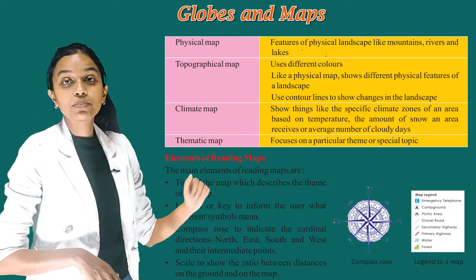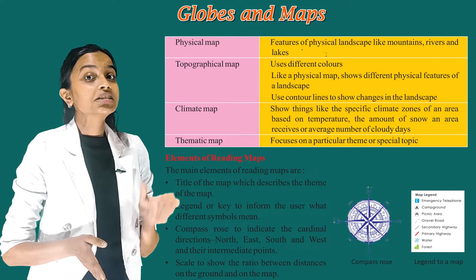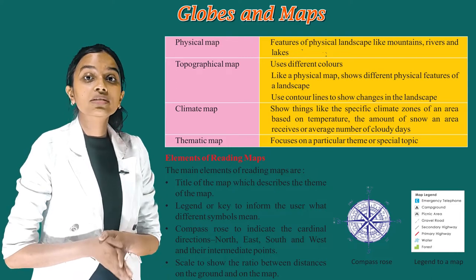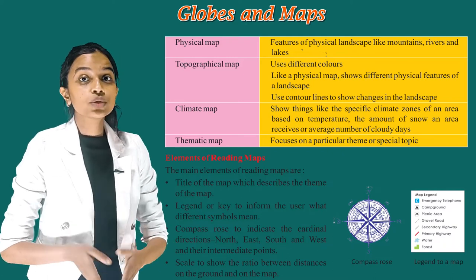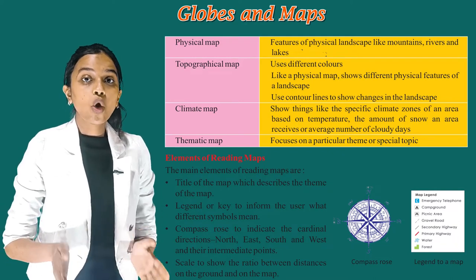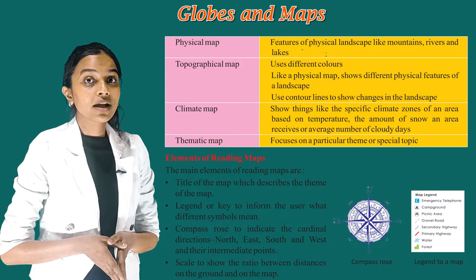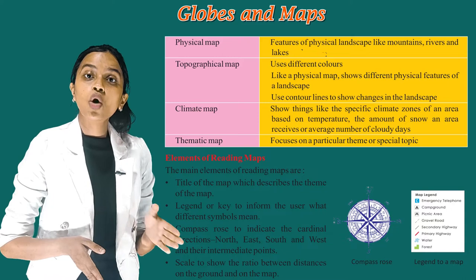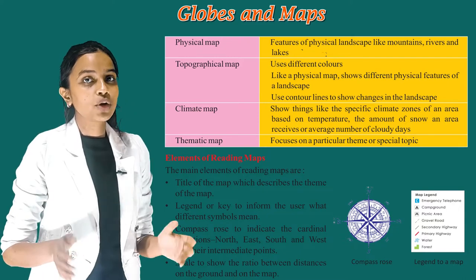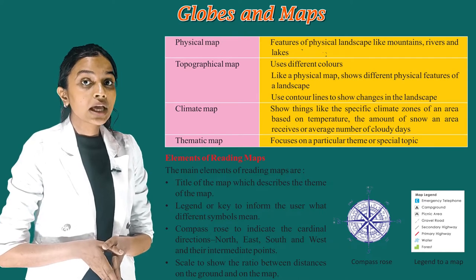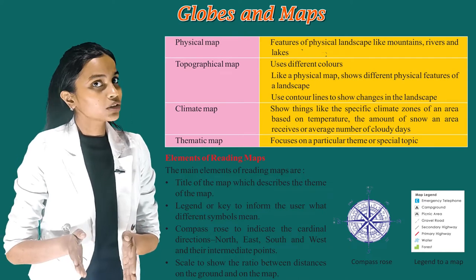Elements of reading maps: the main elements of reading maps are — title of the map, which describes the theme of the map; legend or key, to inform the user what different symbols mean; compass rose, to indicate the cardinal directions north, east, south and west, and their intermediate points; and scale, to show the ratio between distances on the ground and on the map.